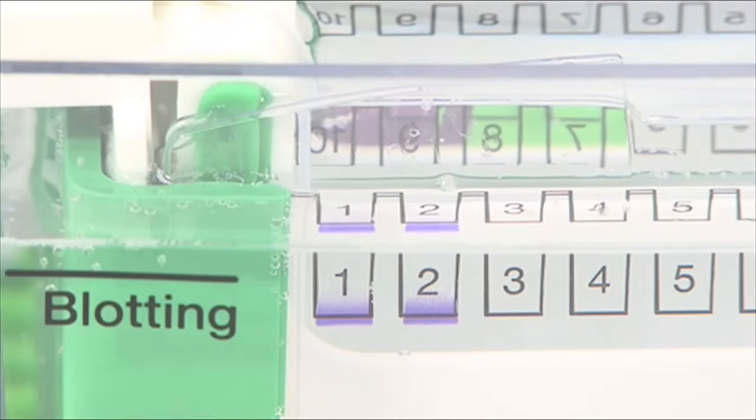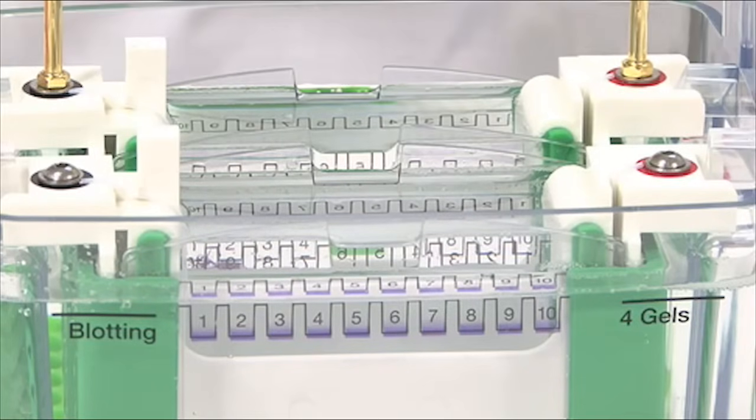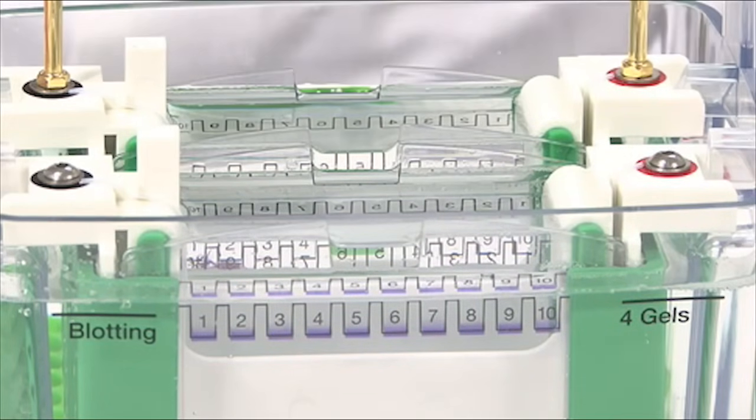Once you have loaded the wells, you are ready to start the electrophoresis run. Place the lid on the TetraTank, making sure to match the colored electrodes on the lid to the electrode posts on the core.